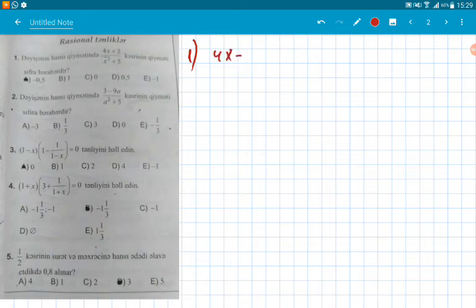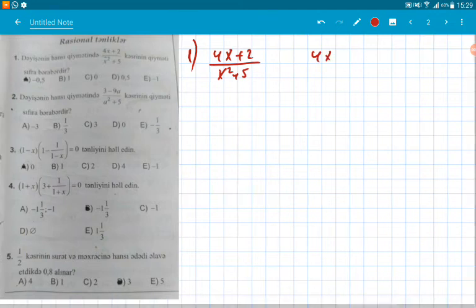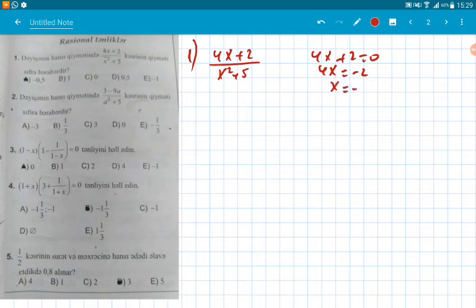At what value does it equal zero? We have 4x+2 divided by x+5. For the fraction to equal zero, the numerator must be zero, and the denominator is not equal to zero. In general, the numerator must be zero for the fraction to be zero. 4x+2 equals zero from here. 4x equals -2, x equals -0.5. The correct answer is option A.